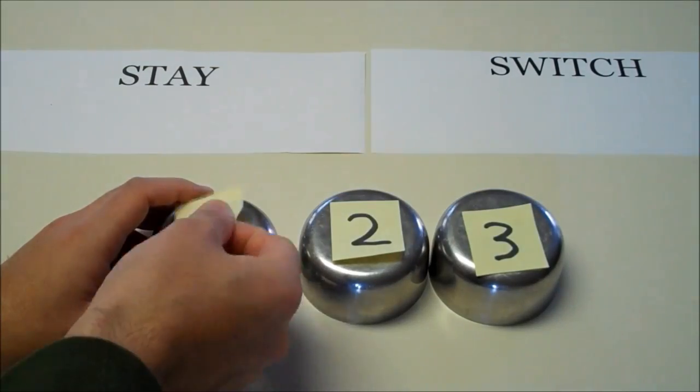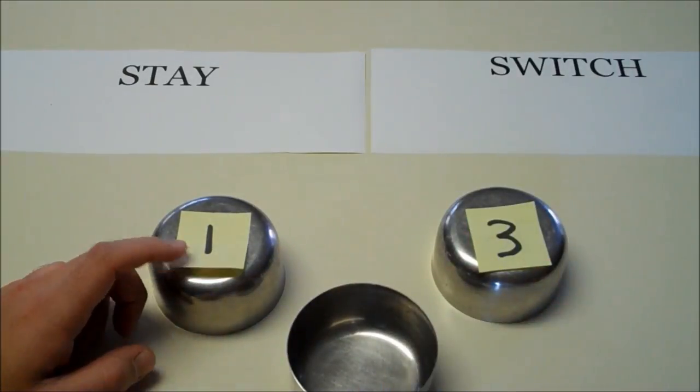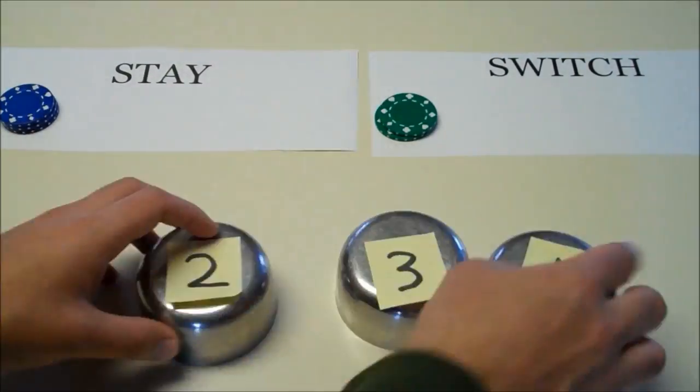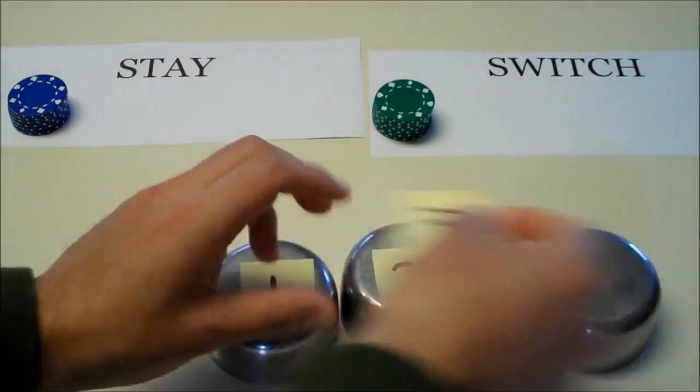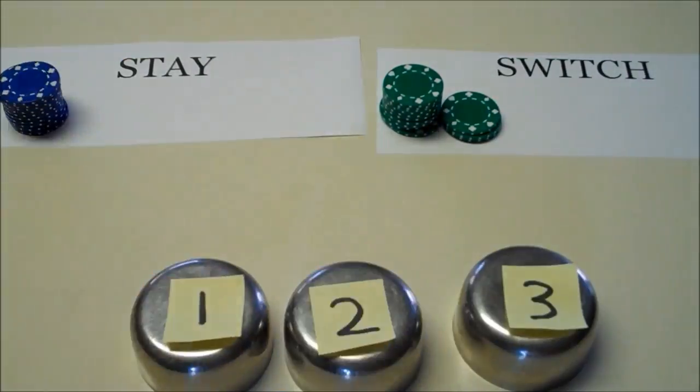We are going to randomize the location of the car, and we're going to imagine picking one of the doors where the car isn't, and deciding whether it's better to stay on door number one, or switch to door numbers two or three, whichever one was not empty.